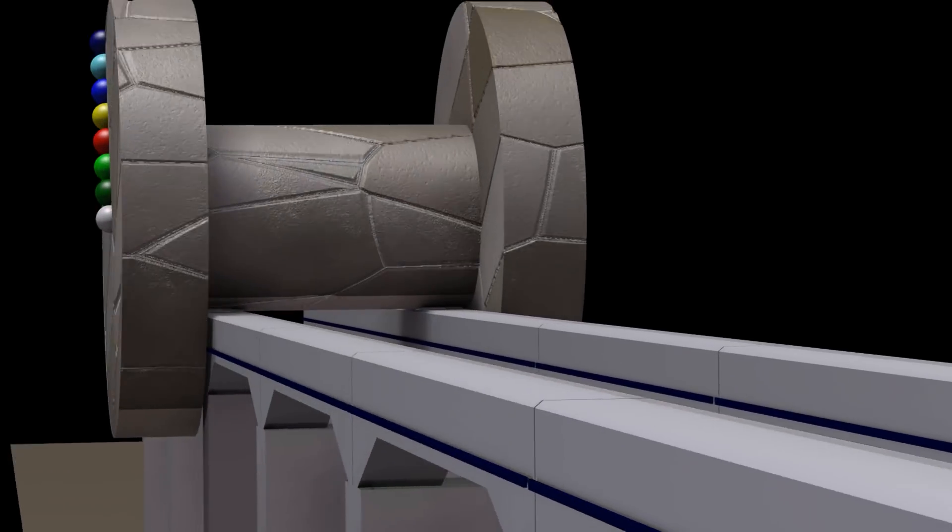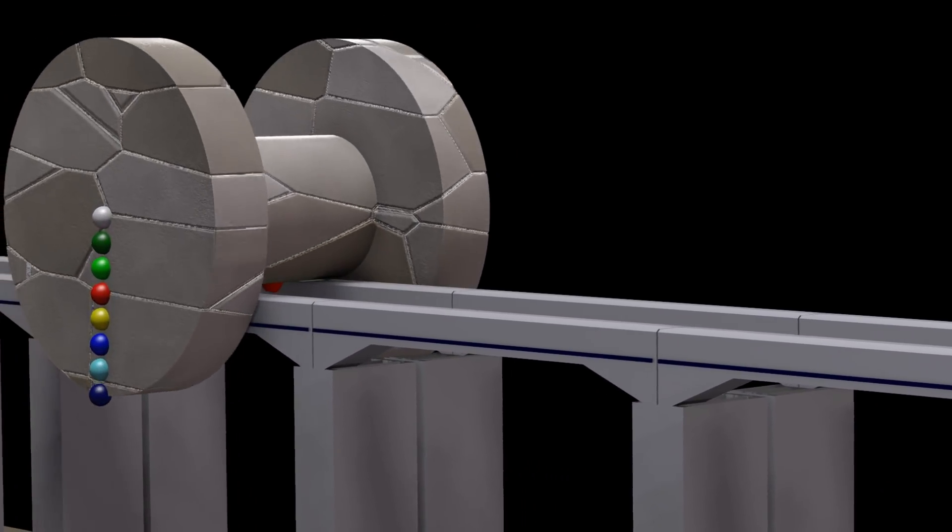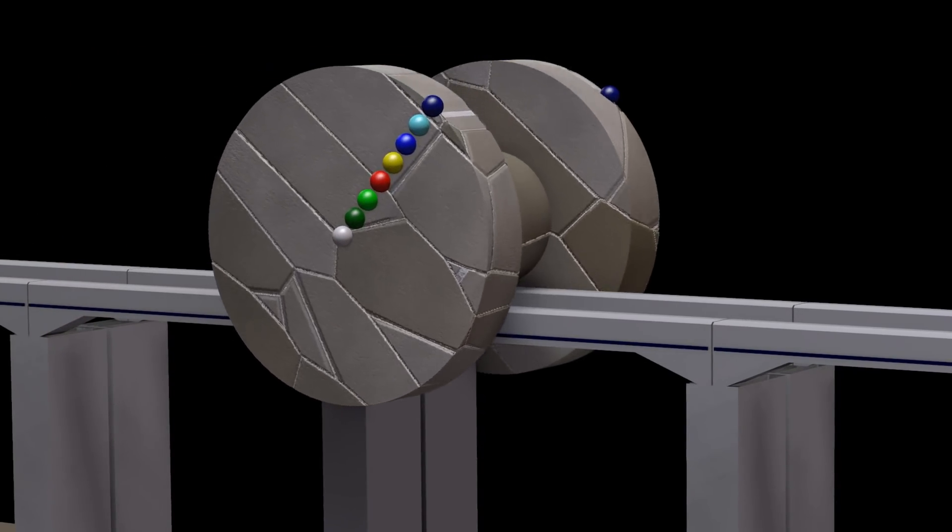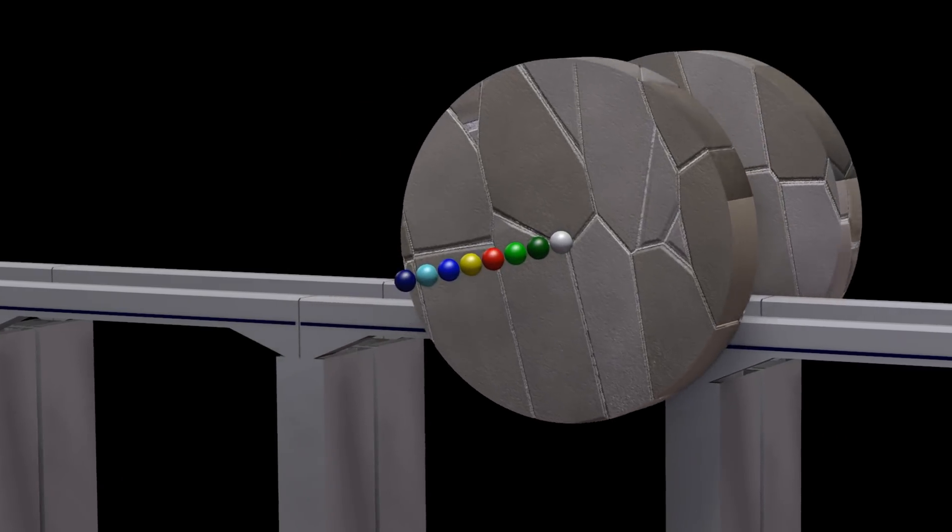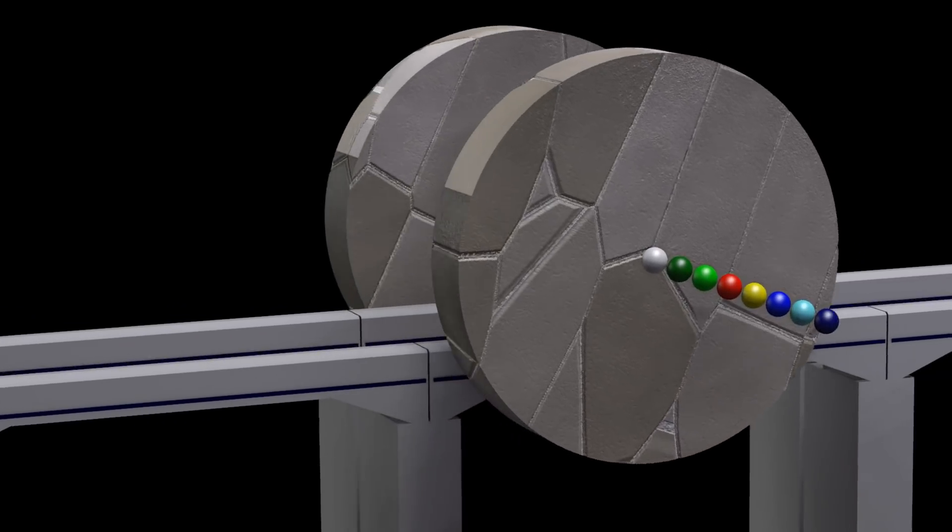Beauty is often hidden where we least expect it. Consider this apparently uninteresting rolling object. This rolling object has dots of various colors attached on both sides.